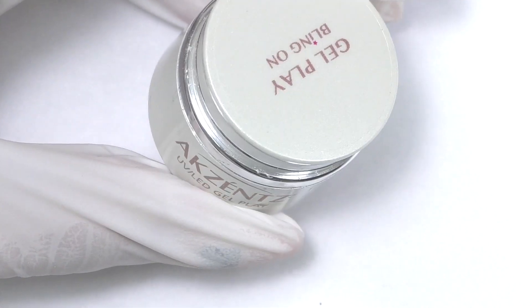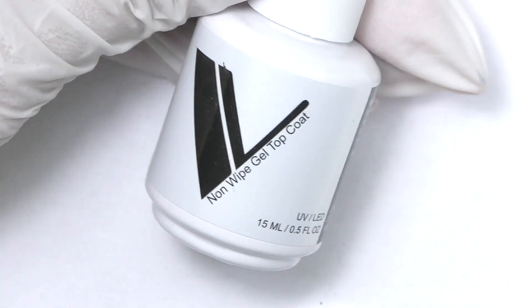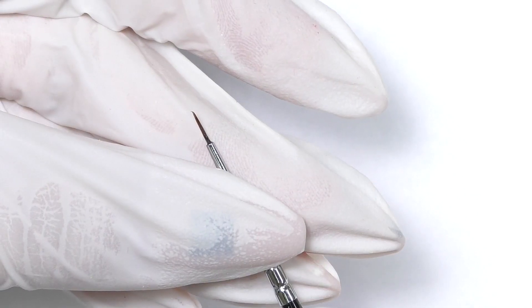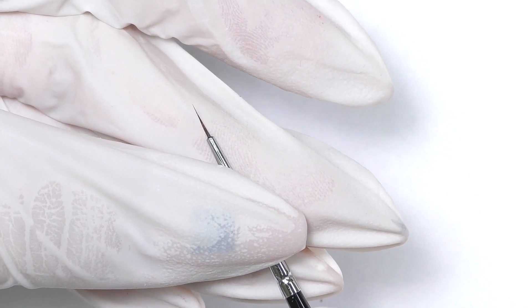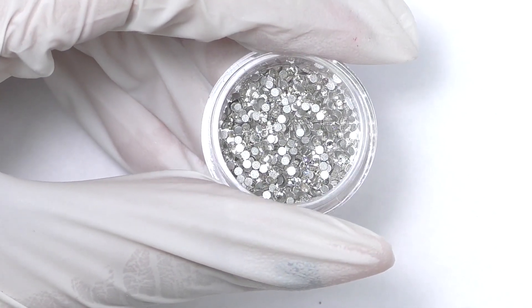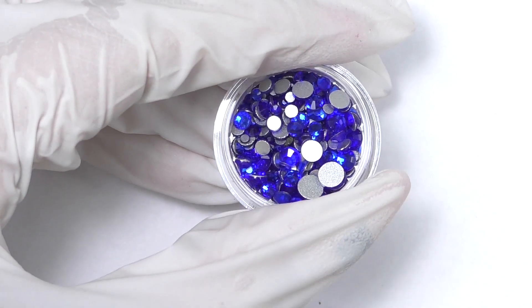To secure rhinestones we will need accent gel play bling on, Valentino no white gel top coat and a thin brush, this is synthetic zero. I will be using white rhinestones and also blue and red.